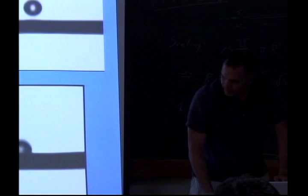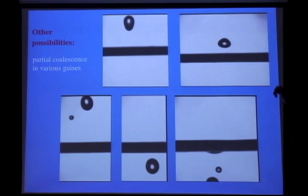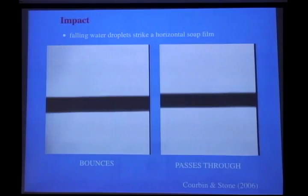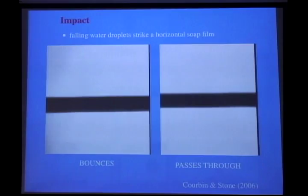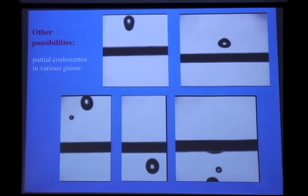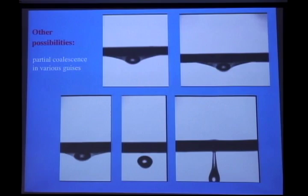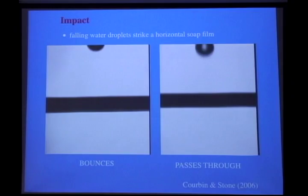So it enters the film and parts of it can be thrown up or down — things are ejected both up and down. You can see a small drop being shot up, so it mostly goes down but part of it goes up.